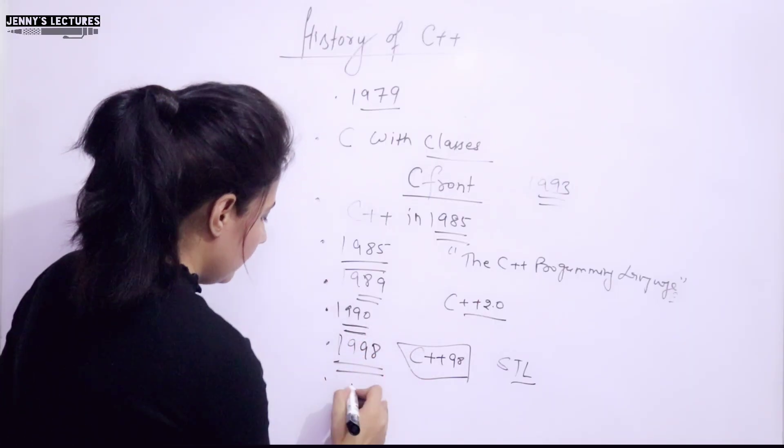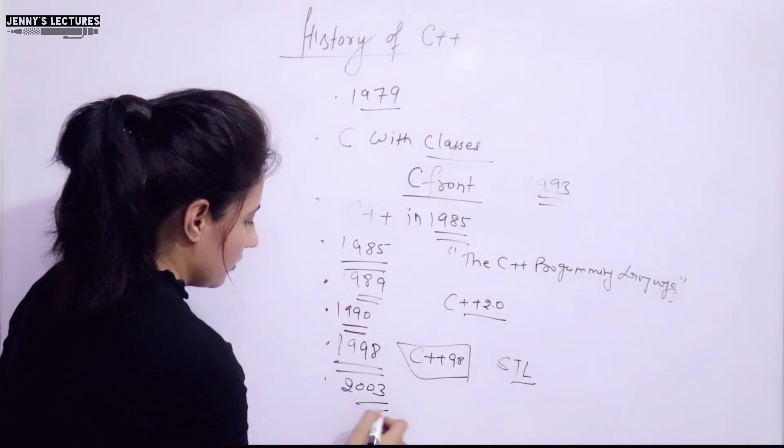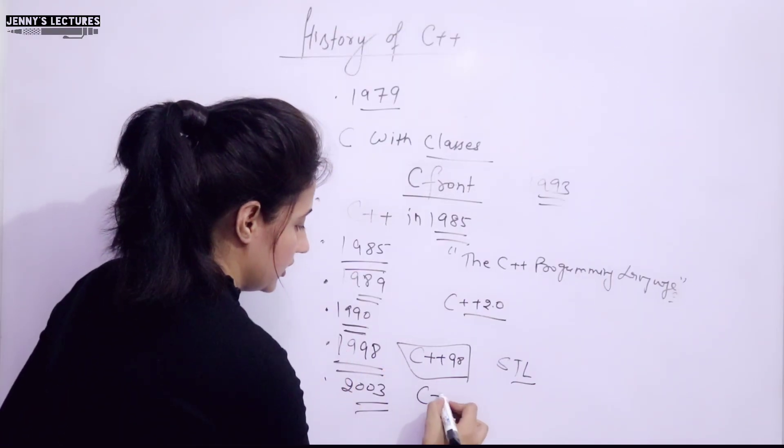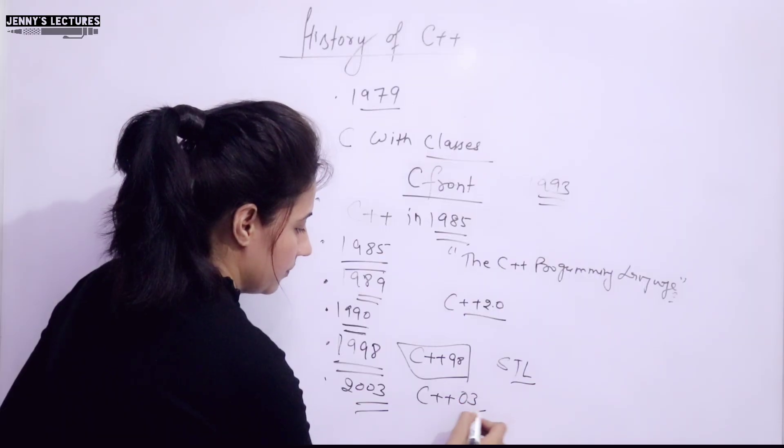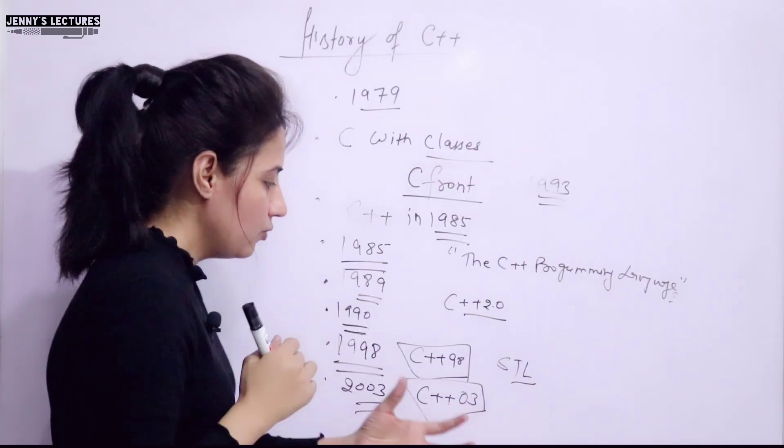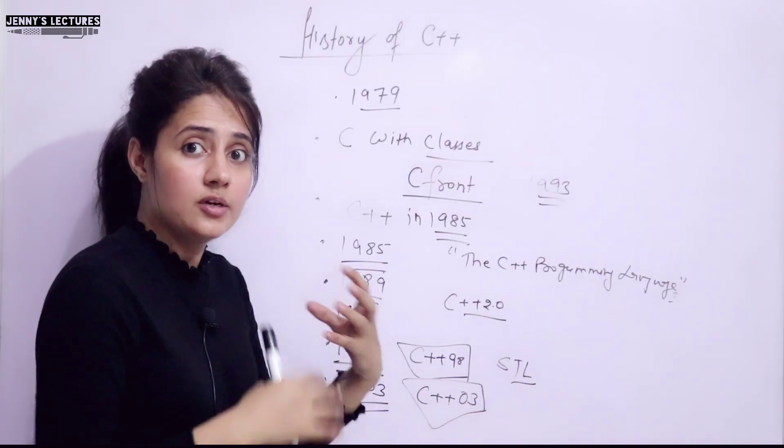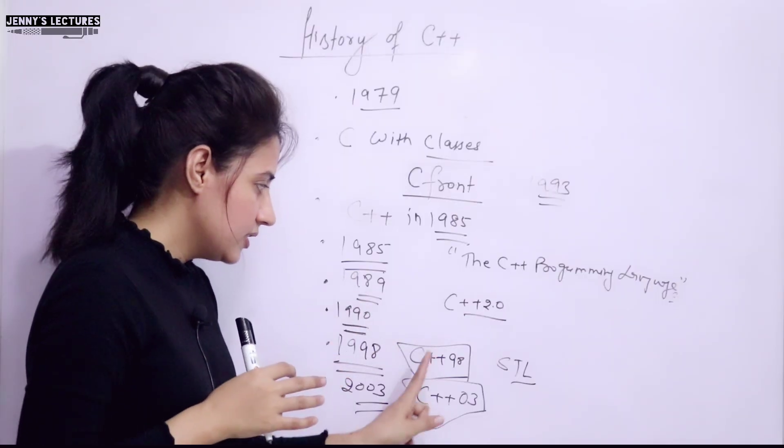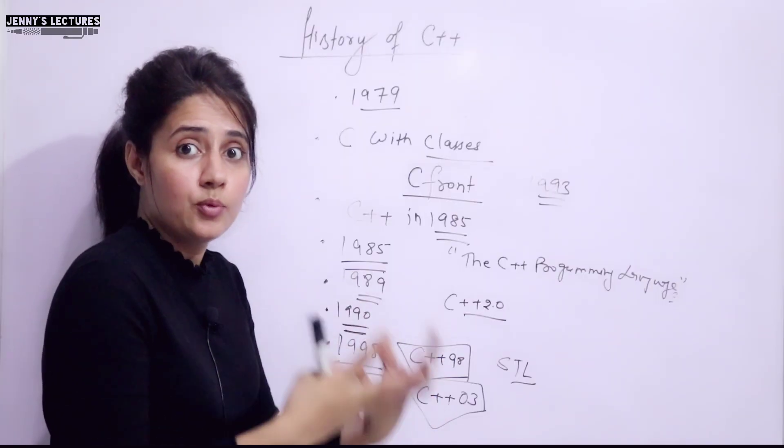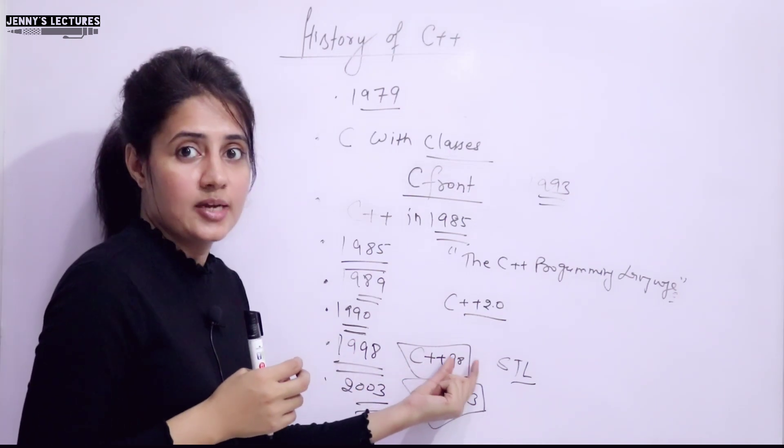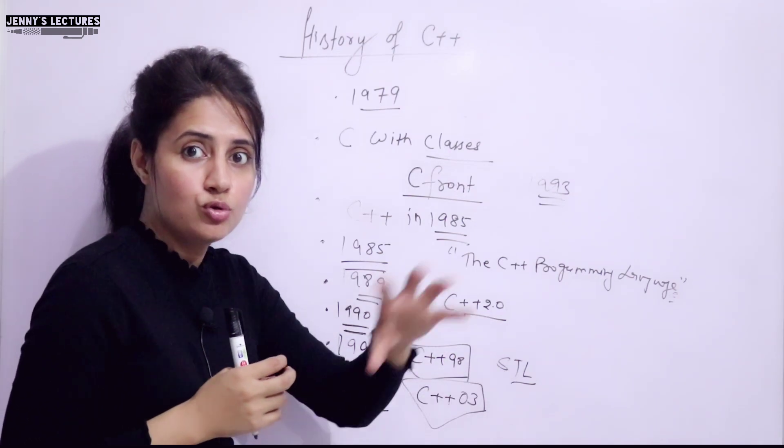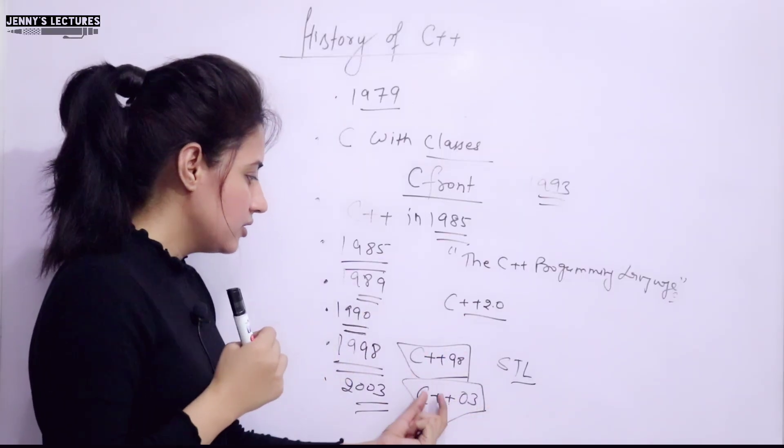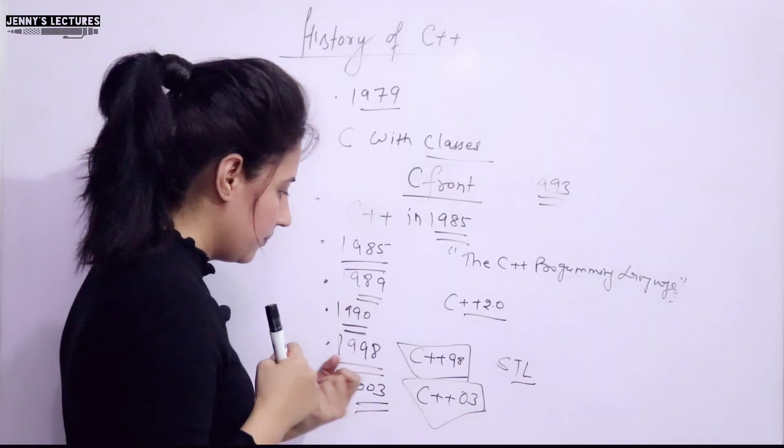Now, again, in 2003, a minor update got released that was known as C++ 03. In which the committee did what? They resolved the multiple problems that were reported in this standard C++ 98 standard. So, they fixed those, you can say bugs or the problems and released a new update that was known as C++ 03. In 2003.